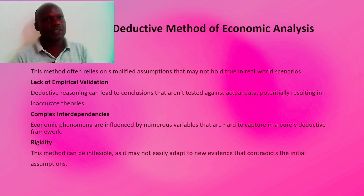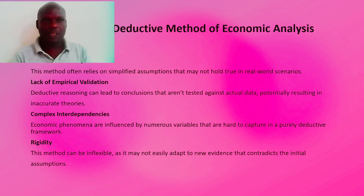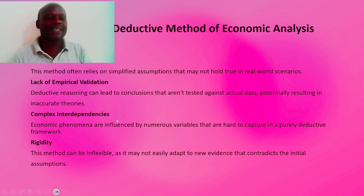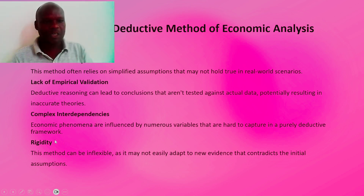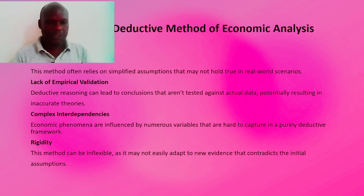For example, without carrying out any research through data collection, one may assume there are more females than males, or that the aging population is less than 20 percent, before conducting an actual experiment. Lack of empirical data is another demerit. The third demerit is complex interdependencies — economic phenomena are influenced by numerous variables that are hard to capture in a purely deductive framework, as seen when data analysis shows the percentage of variation accounted for by independent variables.